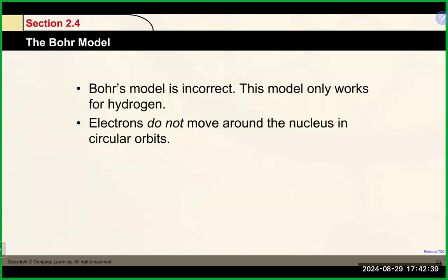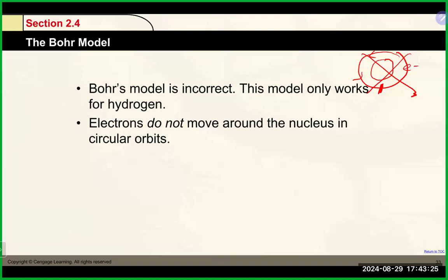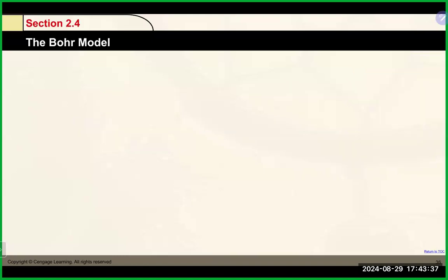The Bohr model works really well to describe those four lines we see in hydrogen, which has only one electron. But when we get to atoms with more electrons, it really doesn't hold up well. Electrons don't move around in perfect circles, so the idea in Bohr of fixed orbits — where an electron travels so predictably you could wait for it to come around again — isn't accurate. We'll eventually move away from Bohr's model to a more quantum mechanical model where electrons move randomly about the empty space within the atom.